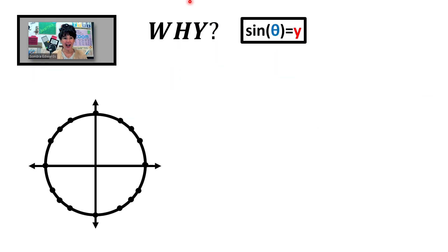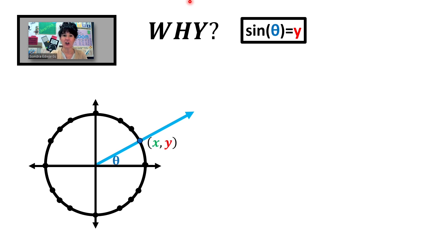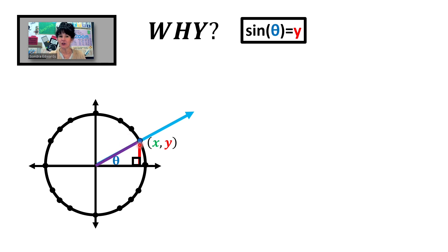Now let's talk about why the sine of an angle measure equals the y-coordinate. Looking at this diagram, I can go on the unit circle to any given point. We've got an angle that goes through that point — I'll call it theta — and the coordinate on the unit circle I'll call (x, y). If you go from that point directly to the x-axis, you create a right triangle. The hypotenuse of this right triangle is the same as the radius of the unit circle, so its length is 1.